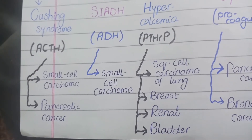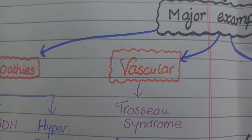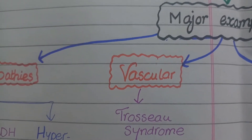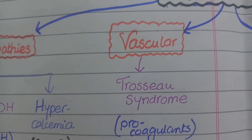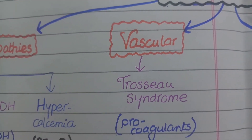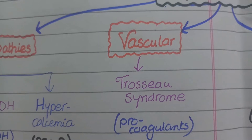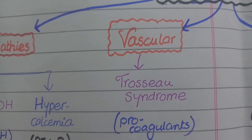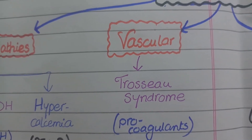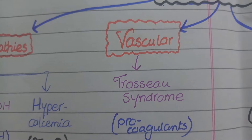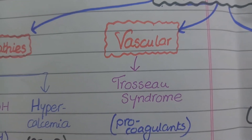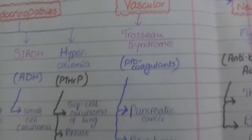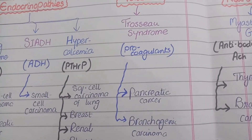Let's move to the second category of paraneoplastic syndrome, which is vascular. The most notable example is Trousseau syndrome, which is caused by release of procoagulants. In Trousseau syndrome, there is widespread formation of clots in the veins and the resulting condition is called thrombophlebitis. It occurs mainly in adenocarcinoma of the pancreas and bronchogenic carcinoma of the lung.